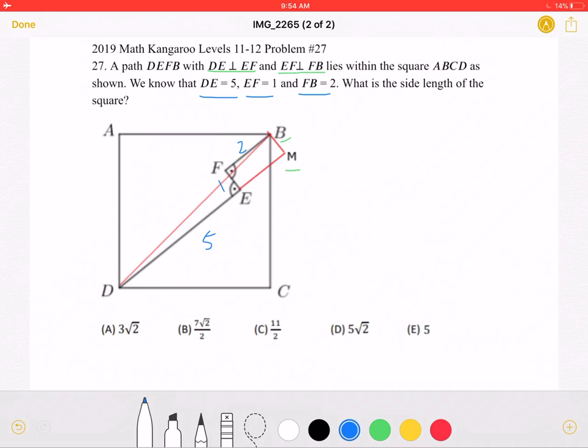Because FEMB is a rectangle, EM must also be equal to 2, and BM must be equal to 1. We can use this information to solve for diagonal DB using Pythagorean's theorem, as this is a right angle, again because it's a rectangle.